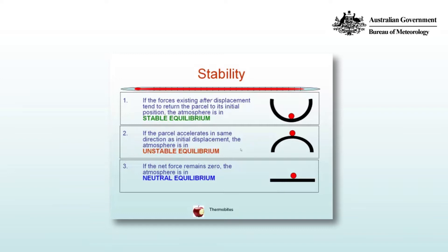Finally we have a neutral equilibrium where there's zero net force after the initial perturbation. In the case of our marble, you push the marble along a flat surface and there's no force either way — neither returning it to its initial position nor accelerating it away. In the real atmosphere this would be equivalent to giving a parcel of air a small perturbation and after that perturbation the parcel is still at the same temperature as the environment, so there's no buoyancy force in either direction.